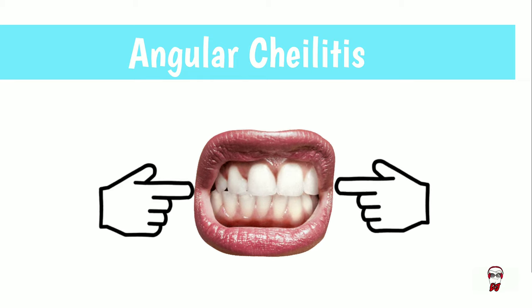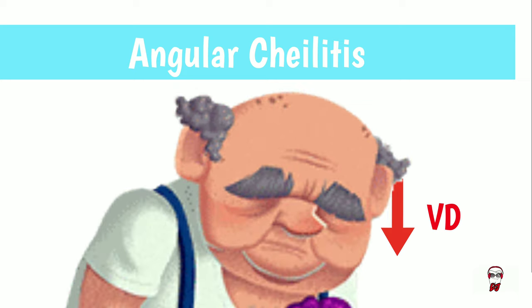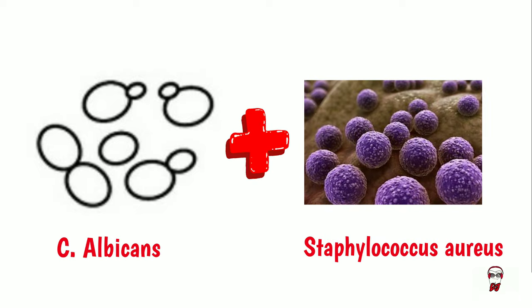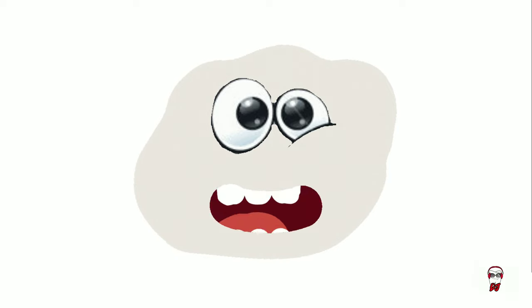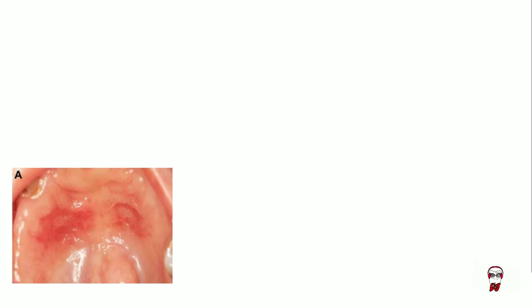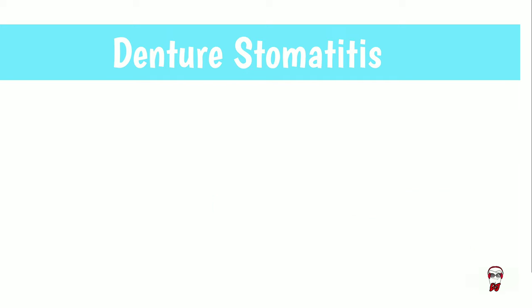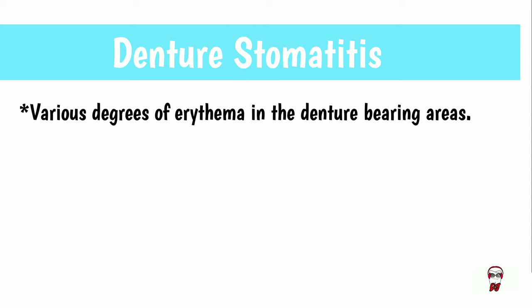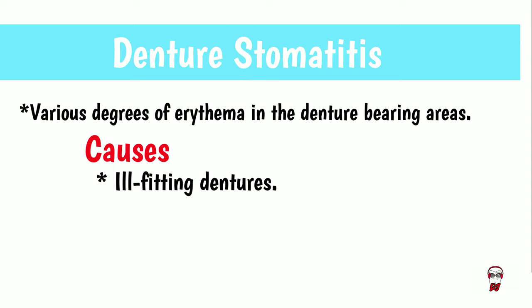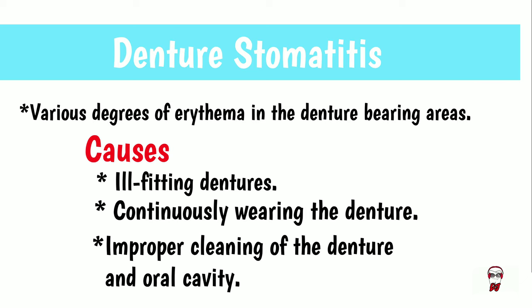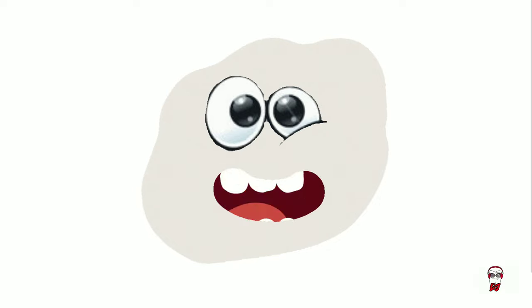When I involve the angles of the mouth, it's known as angular cheilitis. I mostly affect elderly patients, because they have reduced vertical dimensions and saliva pools in these areas, attracting yeast infections like me. 60% of the time, Staphylococcus aureus joins me for this infection. I also take advantage of denture-wearing patients. This infection is known as denture stomatitis, or chronic atrophic candidiasis. Here I cause various forms of erythema in the denture-bearing areas, usually with ill-fitting dentures or patients who don't clean their dentures properly.